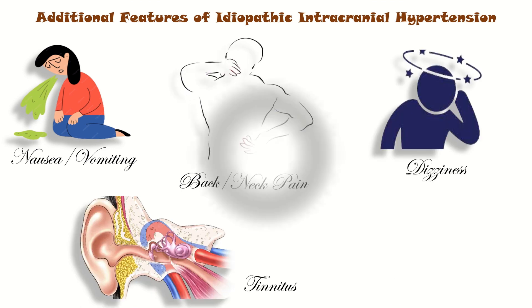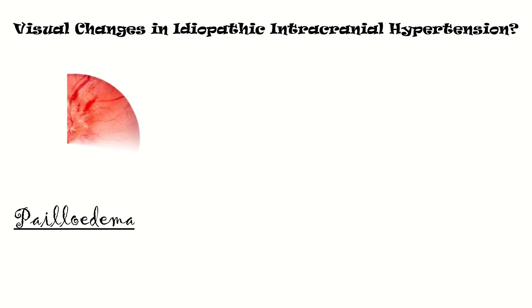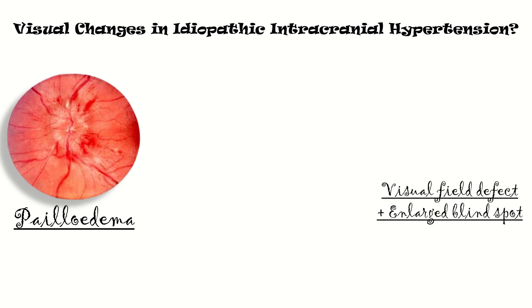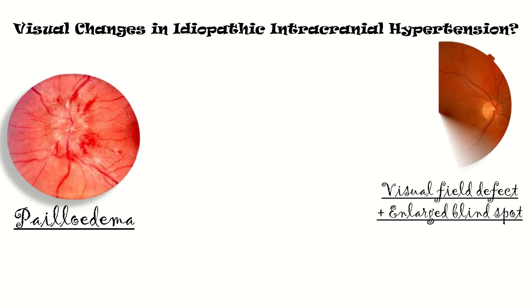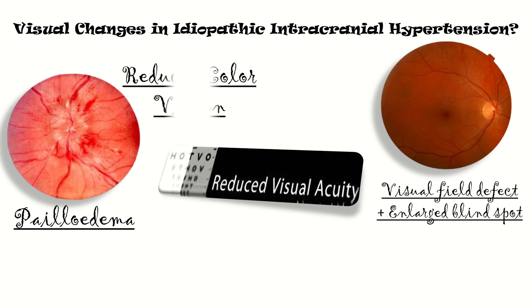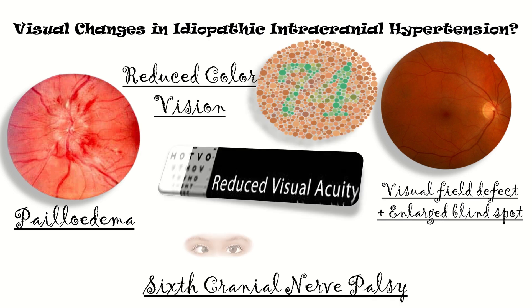Common visual signs of idiopathic intracranial hypertension include papilledema, which is optic disc swelling caused by increased intracranial pressure. Other changes include visual field defect with enlarged blind spot, reduced visual acuity, reduced color vision, and sixth nerve palsy.